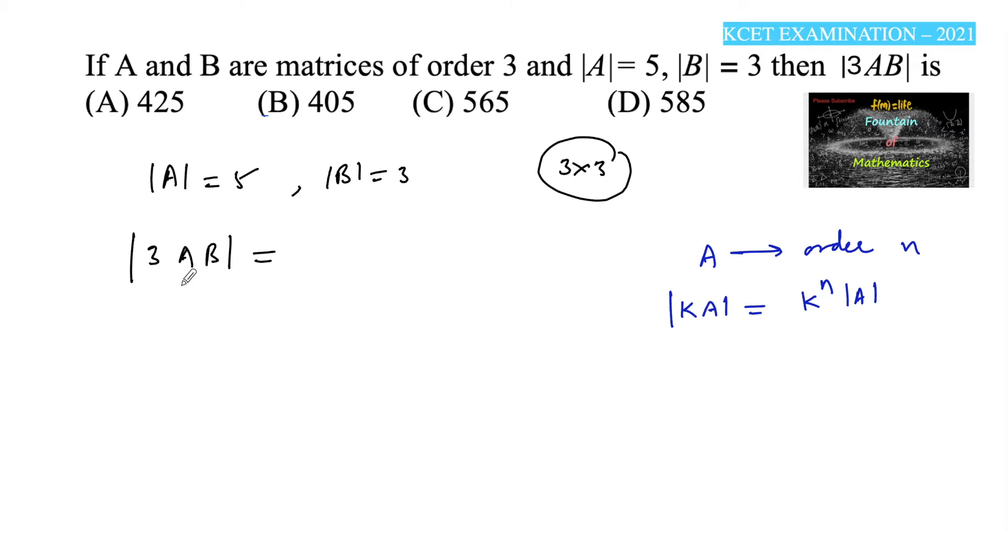So we can write the determinant of 3AB as 3 to the power of the order of A, which is 3, times the determinant of AB. And we know the property of determinants: determinant of AB equals determinant of A times determinant of B.